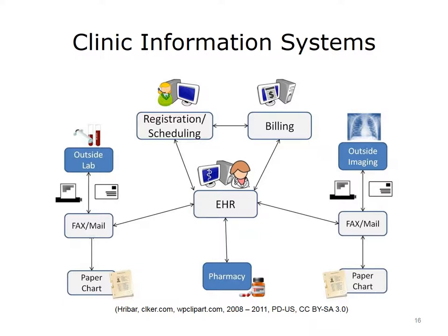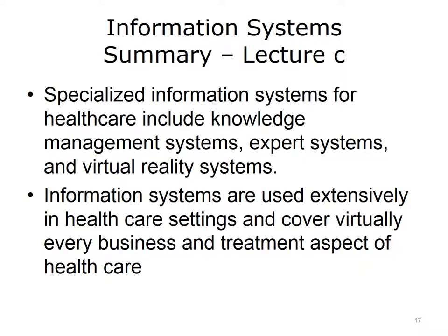It is not surprising that clinic systems are far less complex than a system at a hospital. And while there may be electronic connections to outside systems, oftentimes clinics still rely on fax or mail for receiving reports from outside systems. This concludes Lecture C of Information Systems. In summary, some types of specialized information systems used in healthcare include knowledge management systems, which attempt to generate and report knowledge in addition to data and information, expert systems, which use artificial intelligence and build on knowledge to provide decision-making assistance, and virtual reality systems, which enable training in simulated environments. Healthcare settings use information systems for numerous purposes, including managing billing, financial data, laboratory data, and patient records.